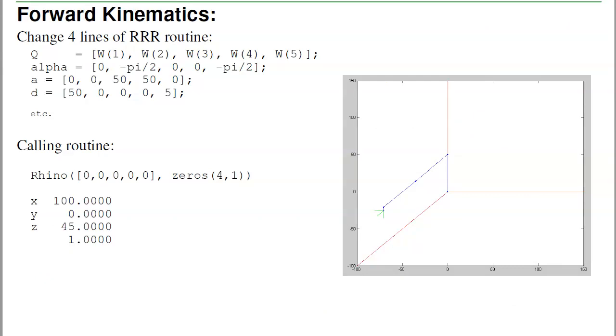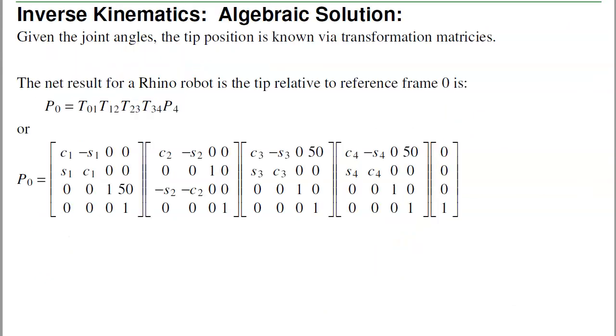Now what I want to do is come up with the Inverse Kinematics. The Inverse Kinematics is the opposite. Forward Kinematics is given the joint angles, where's the tip, we just did that. Inverse Kinematics is given the tip position, where are the joint angles. There's two ways to do that, the Algebraic Solution and Geometric Solution.